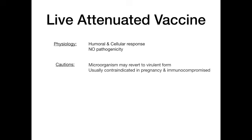A caution you should be aware of with live attenuated vaccines is that the microorganism technically has the ability to revert back to its virulent form. In your normal person with a normal immune response, this won't happen because you've taken the pathogenicity away. However, if you give this to someone who's immunocompromised or pregnant, it has the ability to cause a very dangerous infection, because that microorganism still has the technical ability to infect the host. The bottom line is that live attenuated vaccines are the most risky because they can revert to their virulent form.